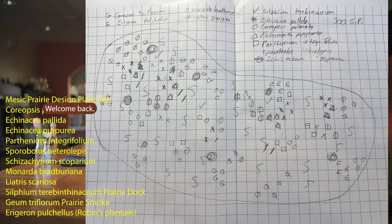Hi everybody, welcome back. I think it's our fourth show now. Last time I promised we're going to look at the foundation of planting a native prairie using Messick Prairie. I start with the foundation because you can keep gardening it into what you'd like it to become and the number of species you'd like to keep adding through the practice of gardening.